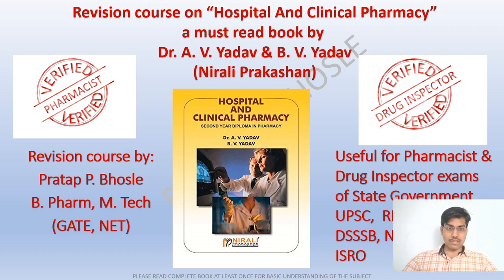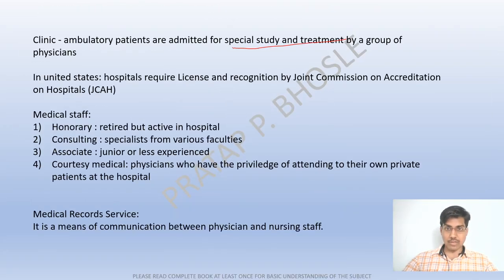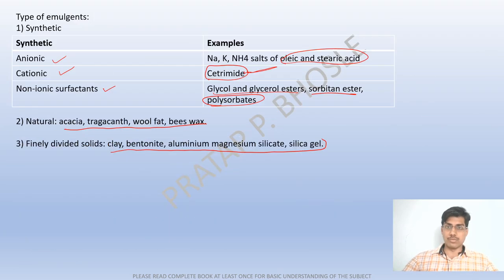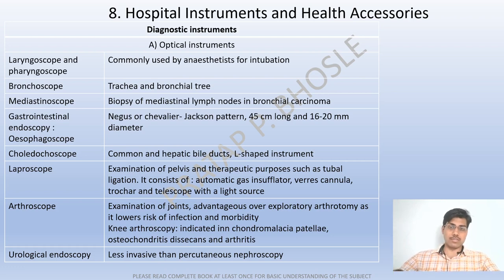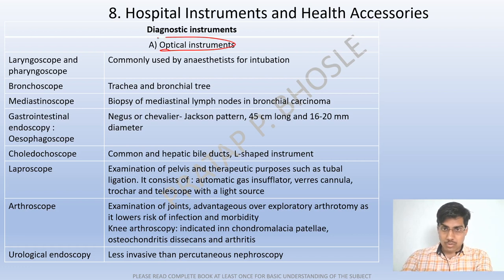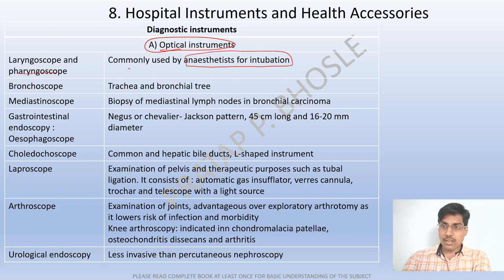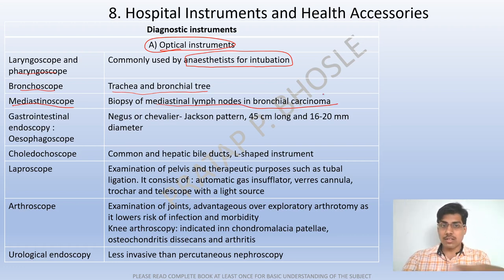Welcome back to our third part of clinical pharmacy covering hospital instruments and health exercises. These are all the optical instruments. The laryngoscope and pharyngoscope are commonly used by anesthetists for intubation, the bronchoscope for intratracheal bronchial use, and the mediastinoscope for biopsy of mediastinal lymph nodes in bronchial carcinoma.